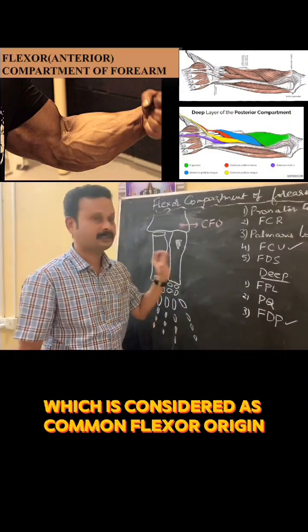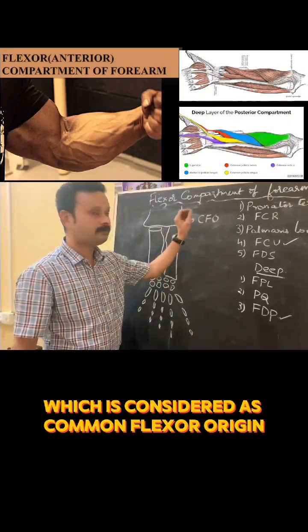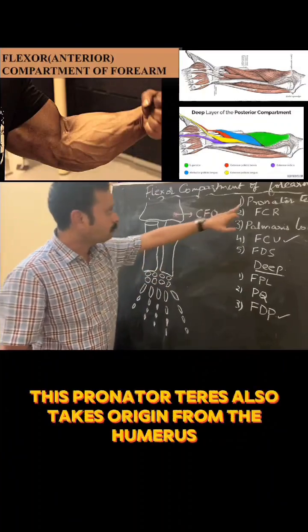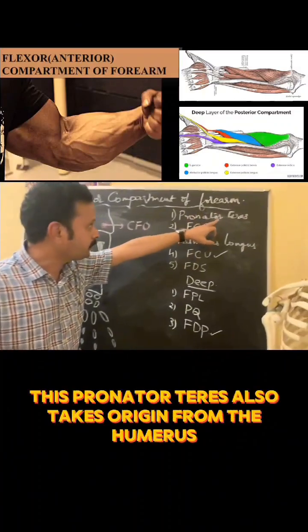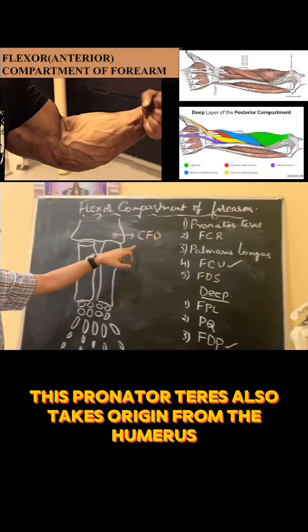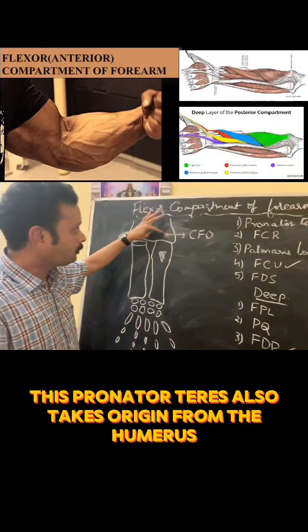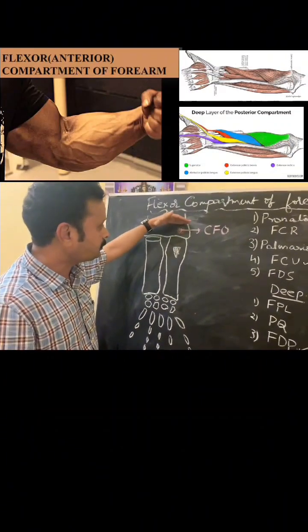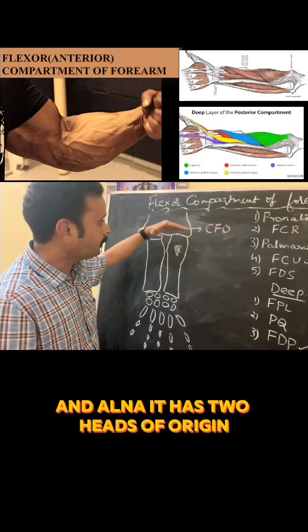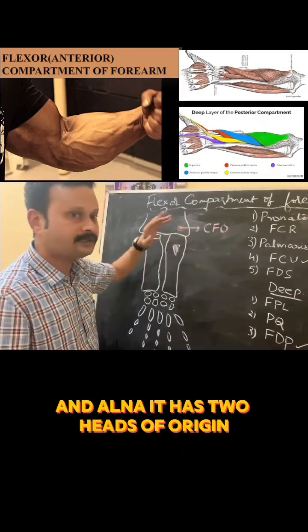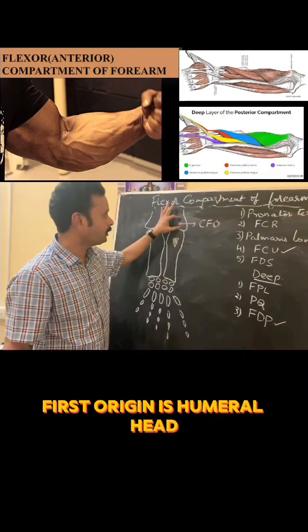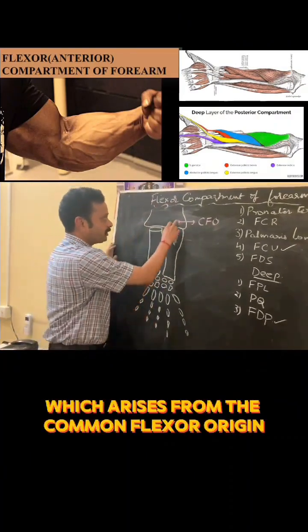Pronator teres also takes origin from the humerus, and it has two heads of origin. The first origin is the humeral head, which arises from the common flexor origin.